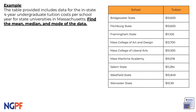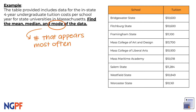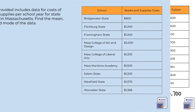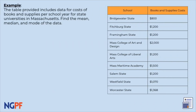Lastly, let's find the mode. The mode is the number that comes up the most often in the data set. Let's refer back to our list from least to greatest. It looks like there's only one repeated value in this data set, so our most common tuition cost, or mode, is $10,600. What is the mode of your data set for the cost of books and supplies?